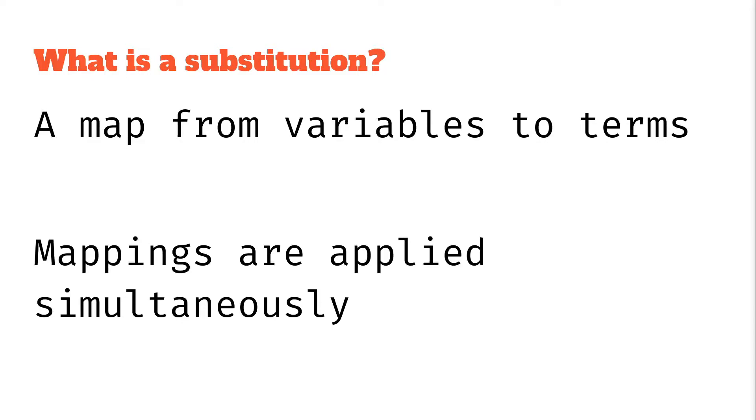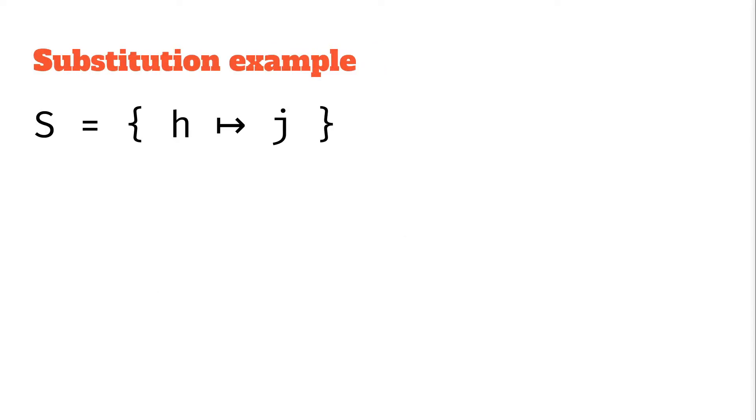I think the easiest way to see it is some examples. So this is what a substitution might look like. We have capital S standing for substitution is a mapping, it's a set of mappings here where we say H is mapped to J.